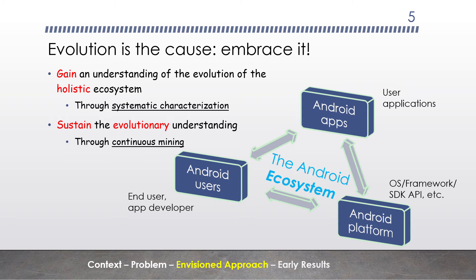Of course, evolution is also the reason that the Android ecosystem keeps its vibrancy, so we cannot get rid of it — we have to embrace it. As one envisioned way towards this goal, we look forward to a solution that addresses the three ecosystem elements — the users, the applications, and the platform — in a holistic manner as shown in this figure.